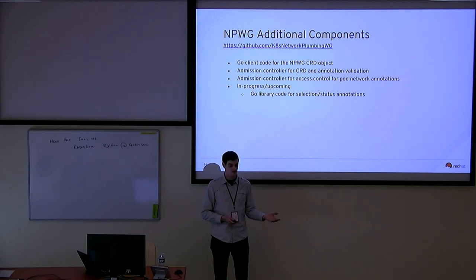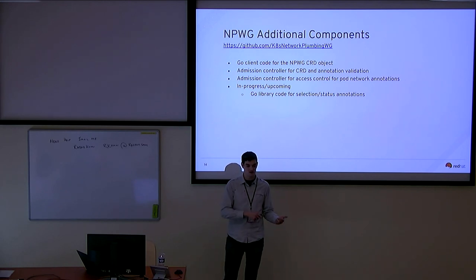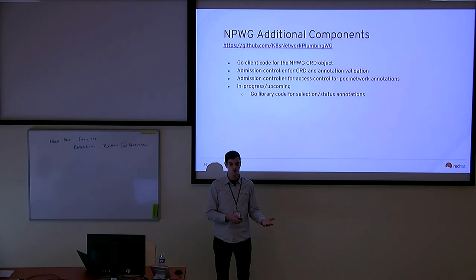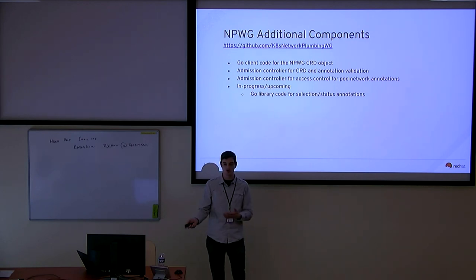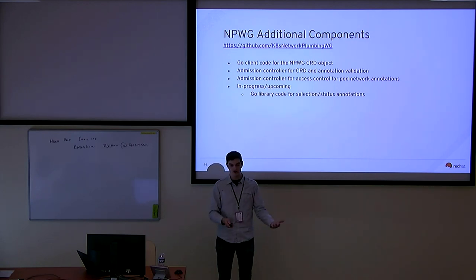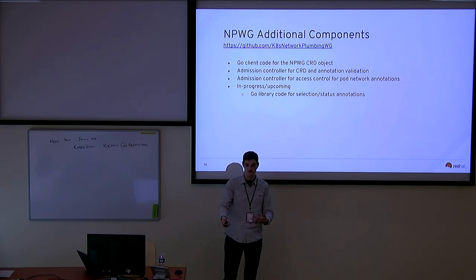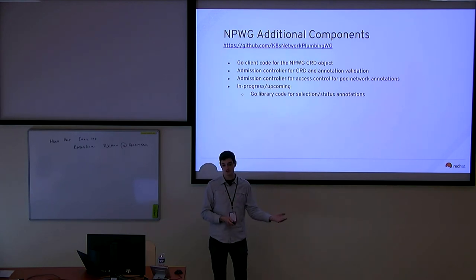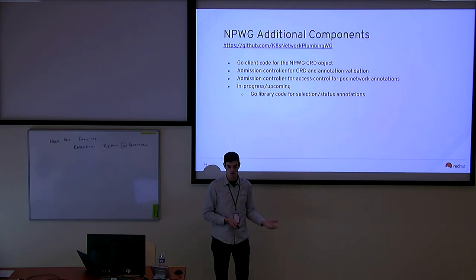The custom resource definition says: this is what my network needs to be created for the pods, and here are the properties that this network should use when a pod is connected to it. You do that through the Kube API. There are also some additional components — for example, access control, because you might not want every single pod in your cluster to attach to a given network. There are also admission controllers for validation, which allow access control of things before they get added to Kubernetes itself.